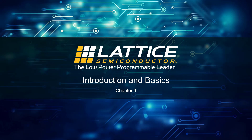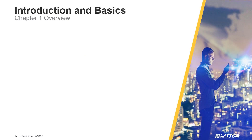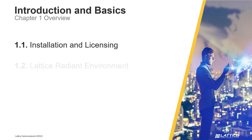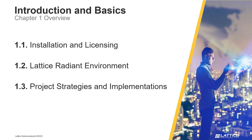Chapter 1: Introduction and Basics. In this section of the Radiant introductory training series we will be discussing some of the basics for using Lattice Radiant. Chapter 1 consists of three sections. In the first section, called Installation and Licensing, the general process for downloading Radiant and requesting a license are covered. In section 2, Lattice Radiant Environment, we will introduce Radiant's workspace environment and what it can be used for.